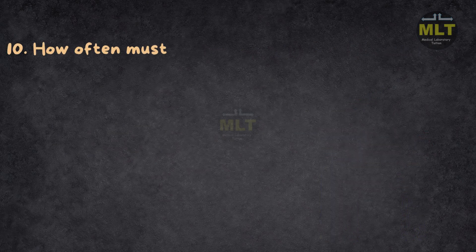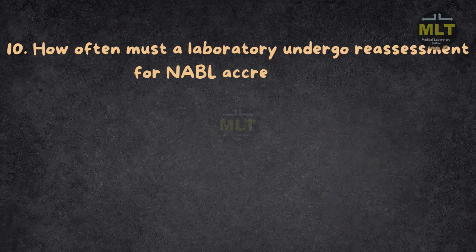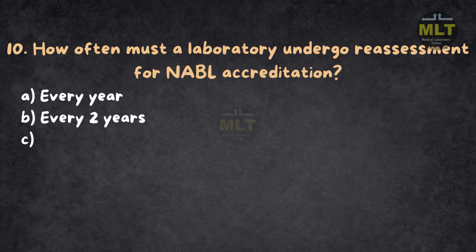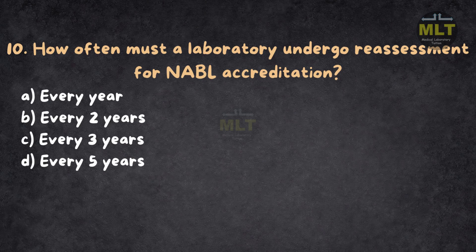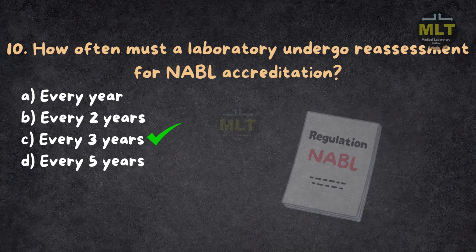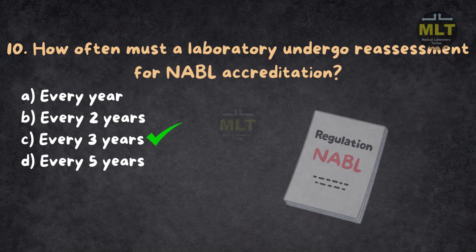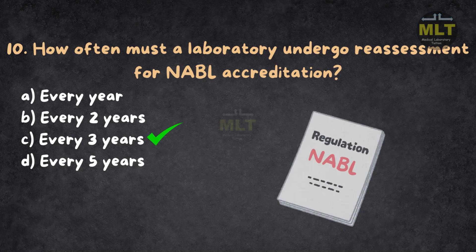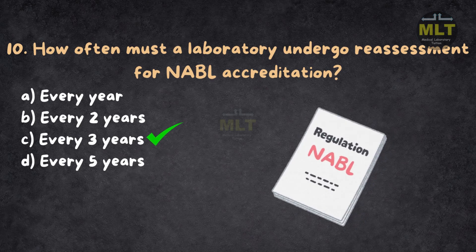Question 10: How often must the laboratory undergo reassessment for NABL accreditation? a. Every year. b. Every two years. c. Every three years. d. Every five years. Correct answer: c. Every three years. NABL accreditation is valid for three years, after which the laboratory must undergo reassessment to ensure continued compliance with standards.